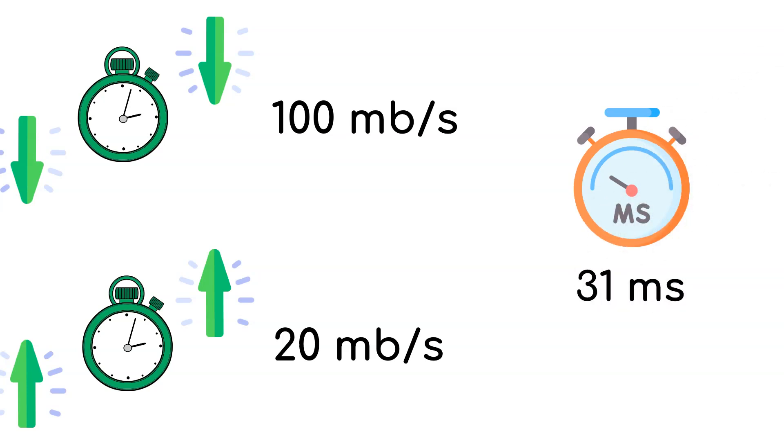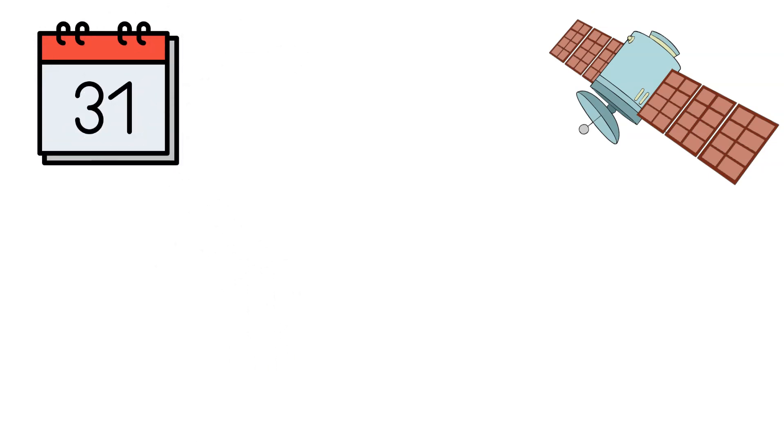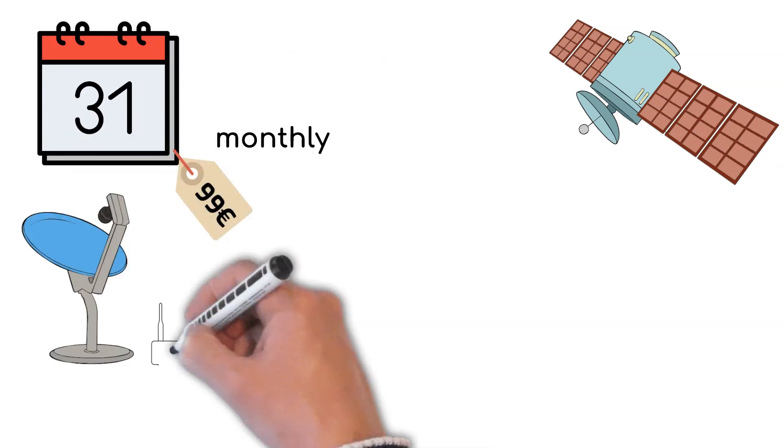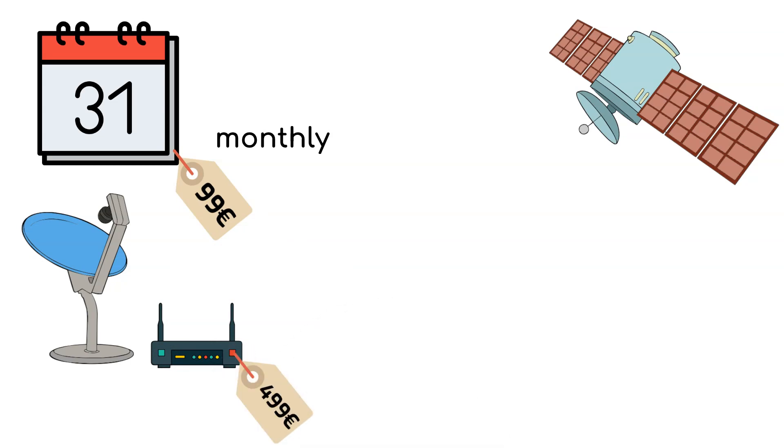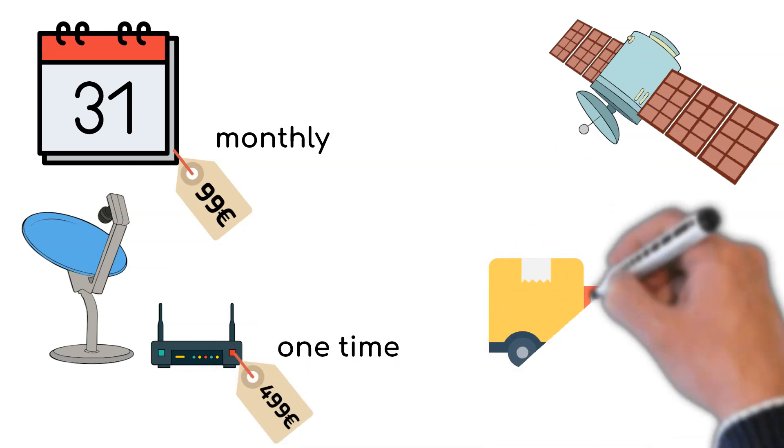The whole thing is not yet affordable. Elon Musk's service is expected to cost 99 EUR per month. But that's not enough. An additional one-time fee of 499 EUR is charged for the hardware and 59 EUR for shipping.